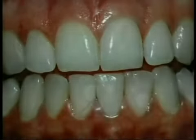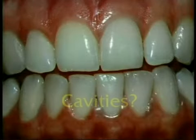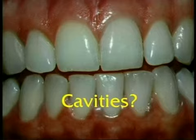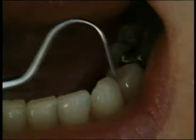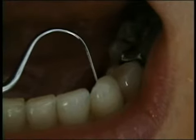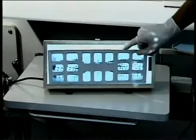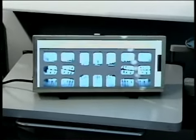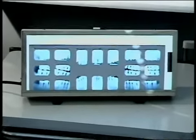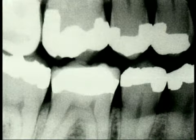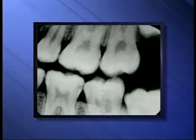Finding cavities is sometimes easy, but sometimes it's not. For hard-to-find cavities, we use a dental explorer and x-rays. We check the tops and sides of your teeth with a dental explorer. To look for cavities between teeth, we use x-rays. Metal fillings and crowns show up as bright white. Cavities show up as dark spots. These small dark spots on this x-ray are cavities.